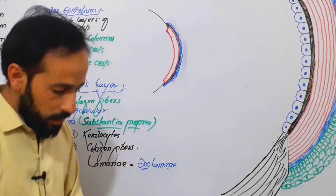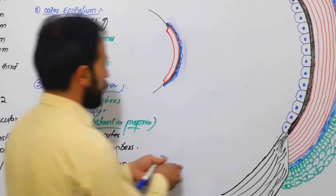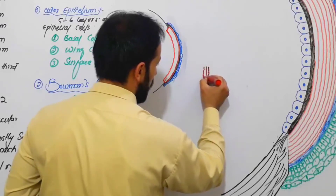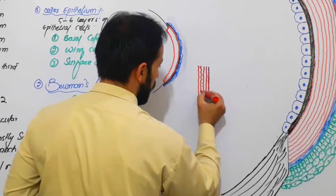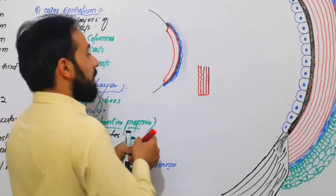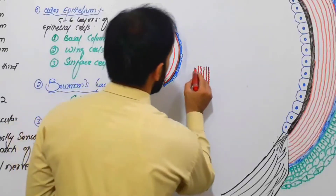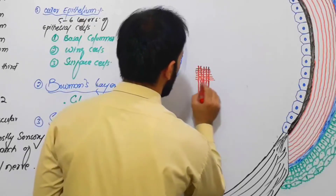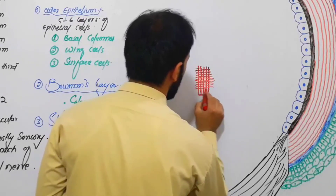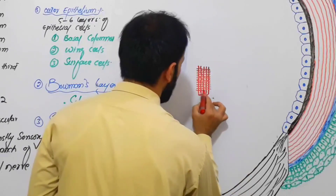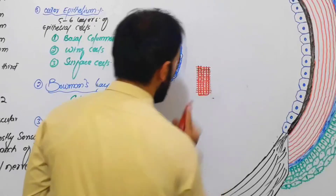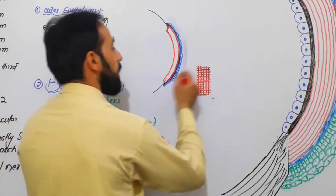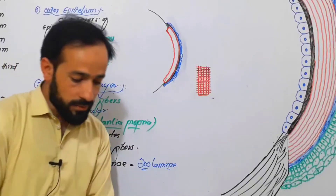Let me show you with a diagram. For example, this is one layer of collagen fibers like this. Behind this layer, there is another horizontal layer of these collagen fibers. They are arranged in a very special manner so that they allow the light to pass in a special pattern. Behind that layer, there will be another vertical layer, and behind that there will be another horizontal layer.